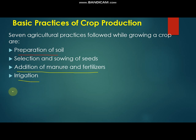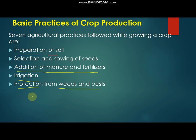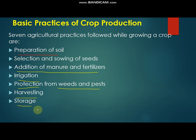Adding manure and fertilizer, where we provide proper nutrients for better growth of the plants. Irrigation, that is the supply of water at regular intervals of time. Protection from weeds and pests — weeds are unwanted plants that grow among crops and harm their production. Harvesting, after the growth of the crops. And storage, the final step where harvested crops are stored for future utilization.